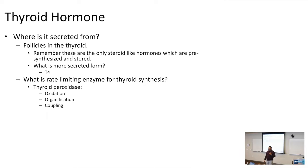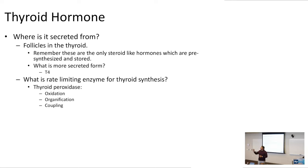Oxidation means iodide gets converted into iodine. Organification, catalyzed by thyroid peroxidase, is taking that iodine and attaching it onto tyrosine residues. When you put one iodine onto a tyrosine residue, that's called MIT. When you put two iodines on a tyrosine residue, that's called DIT. MIT plus DIT equals T3, and DIT plus DIT equals T4. That's the coupling reaction.